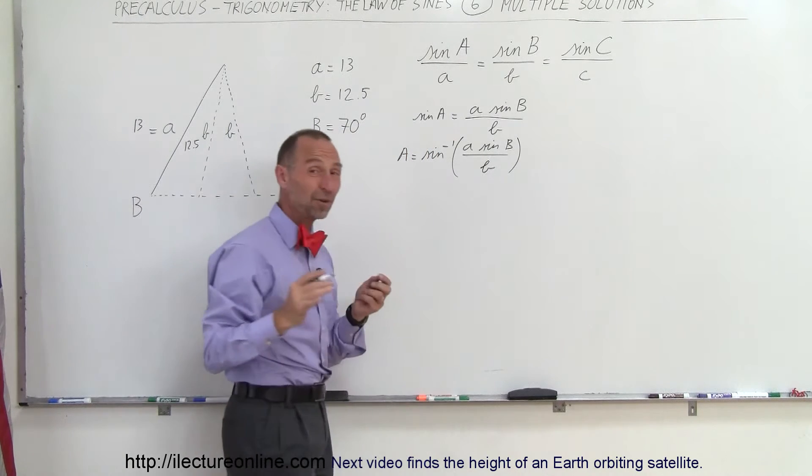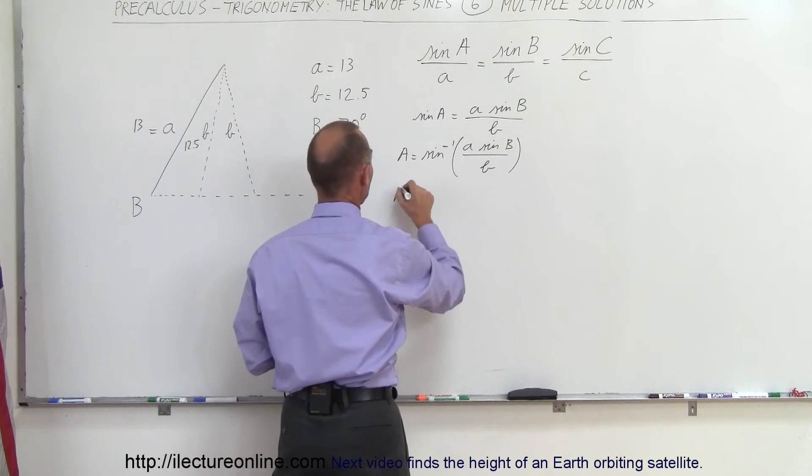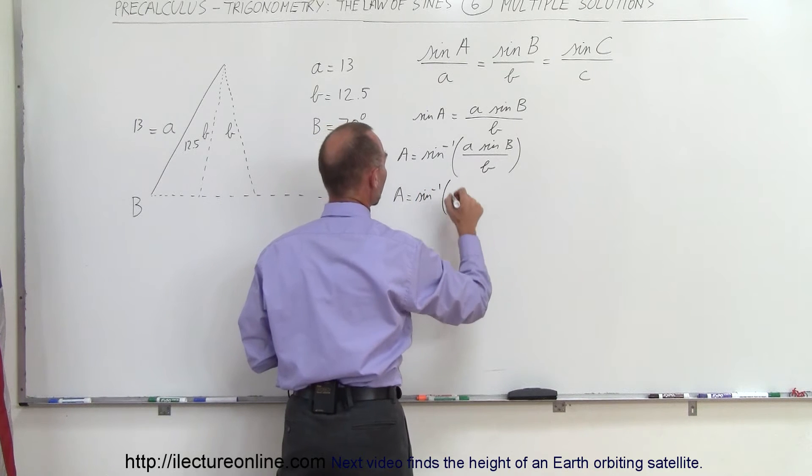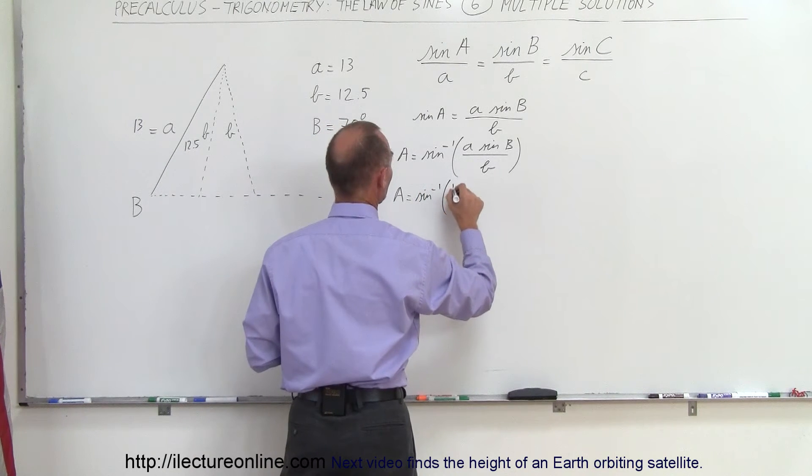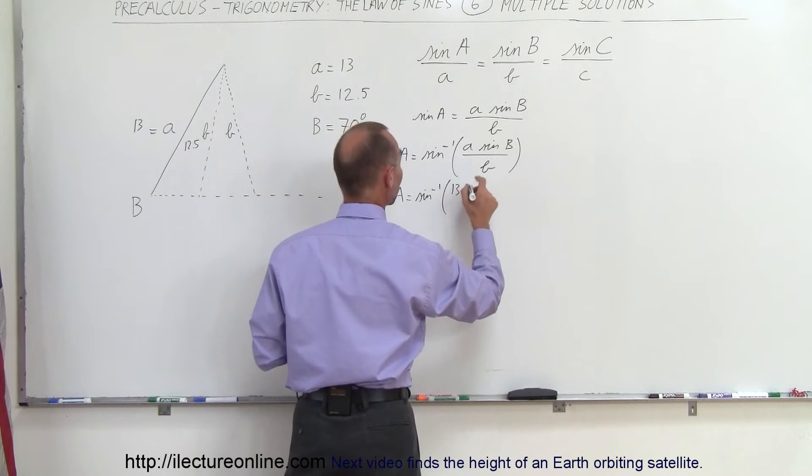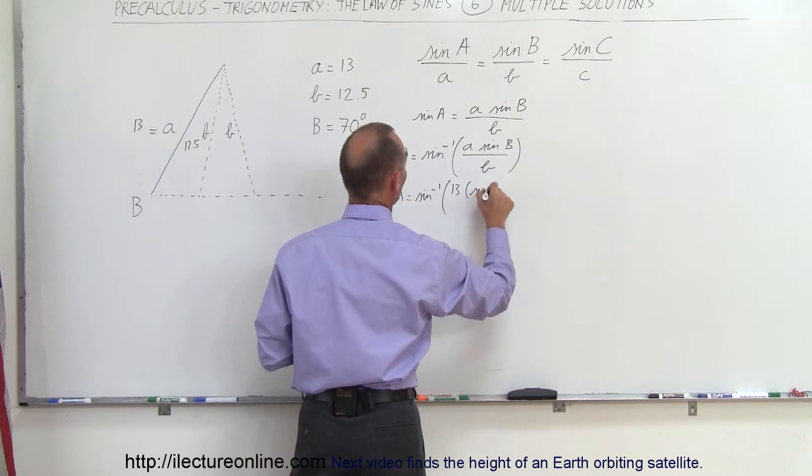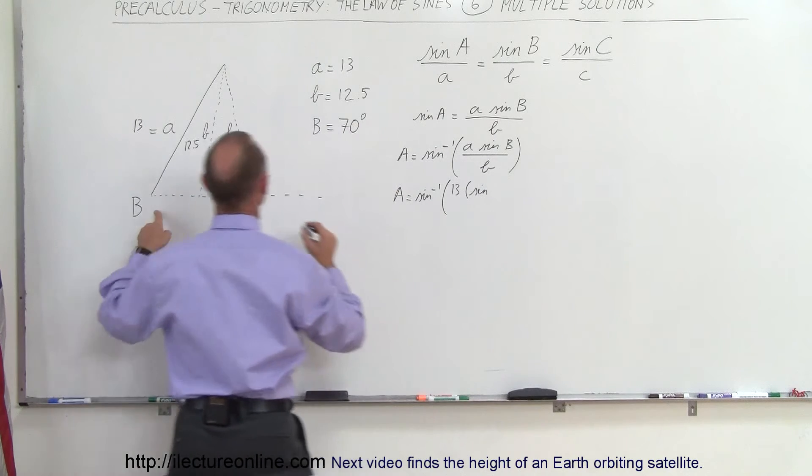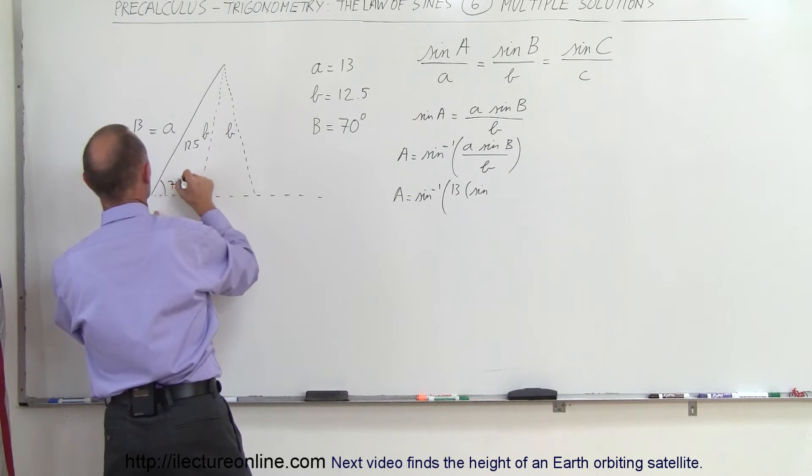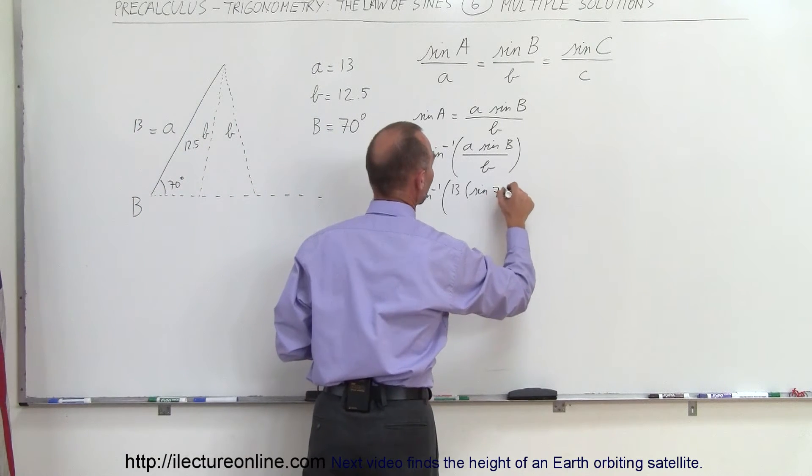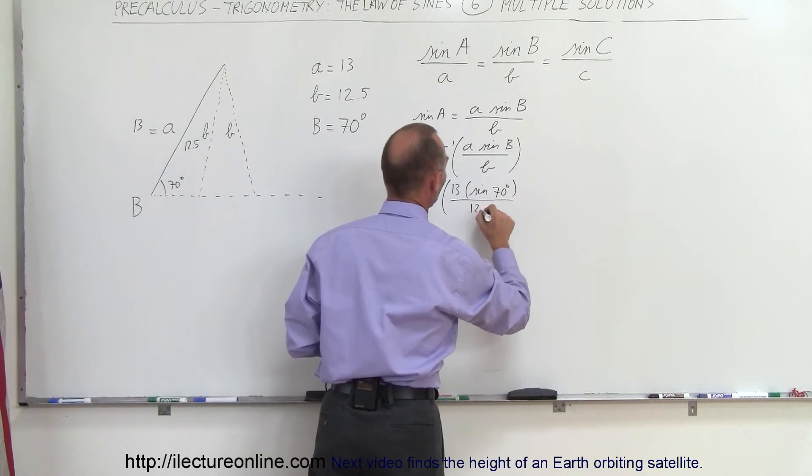Plug in the numbers. A would be equal to the arc sine of A, which is 13, times sine of B, which is 70 degrees, divided by 12.5.